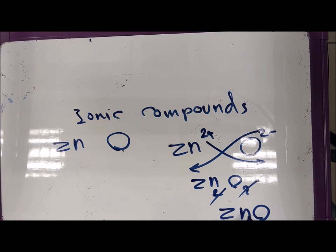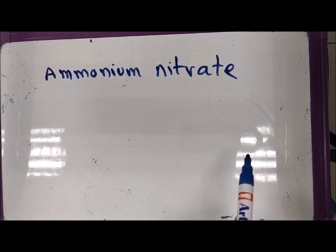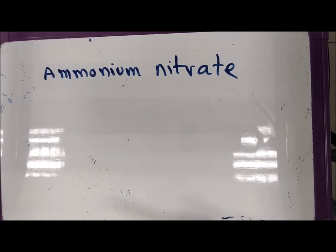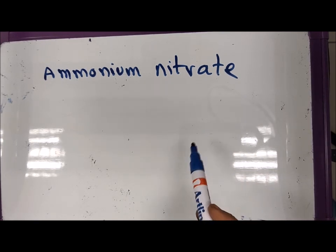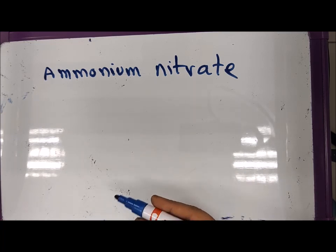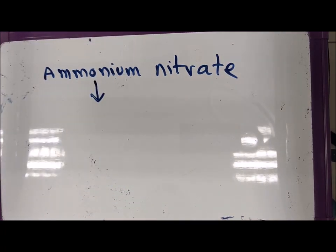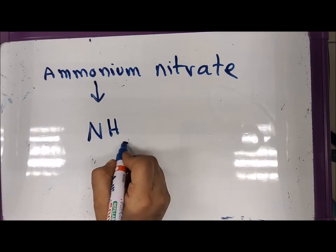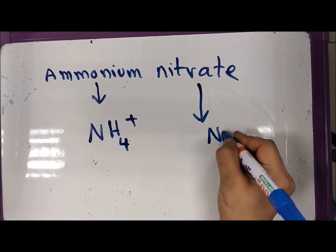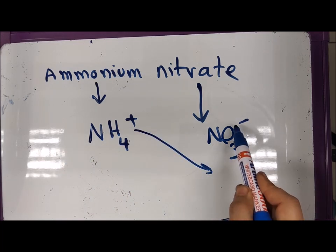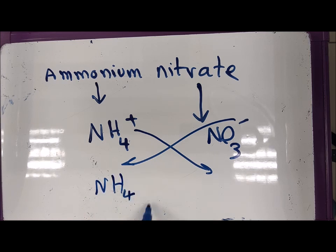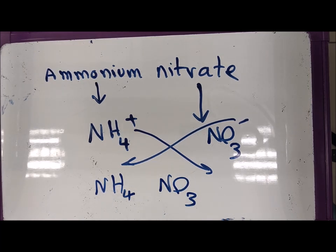You can pause the video and work out ammonium nitrate yourself. First find the ions involved: ammonium is NH₄⁺ and nitrate is NO₃⁻. Swap the charges — both charges are 1, so you get NH₄NO₃. That is the formula of the compound ammonium nitrate.